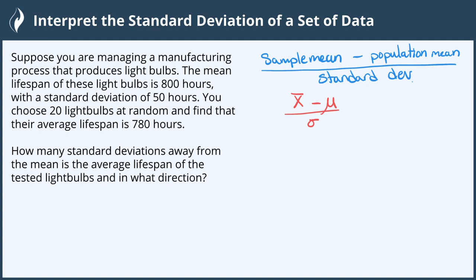So let's go ahead and take our sample mean. We found that our light bulbs were 780 hours for the lifespan, and the population is 800 hours. This tells us how far away we are. 780 minus 800 gives us negative 20. This means that our lifespan of the sample is lower than the population lifespan, and we know that because the sample is 780 and the population is 800.